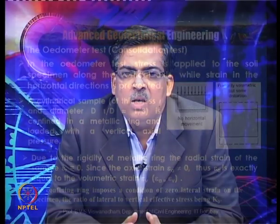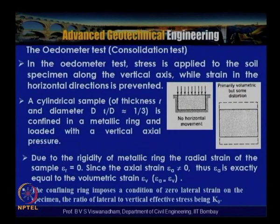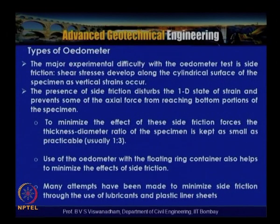Sigma_v equals sigma_a equals k-naught times sigma_r (radial stress). Several investigators have attempted to measure lateral resistance using strain gauges and load cells. There are two types of oedometers: the fixed ring oedometer and the floating ring oedometer. The major experimental difficulty in oedometer testing is side friction — shear stresses that develop along the cylindrical surface of the specimen as vertical strain occurs.